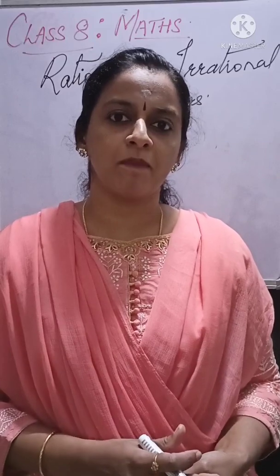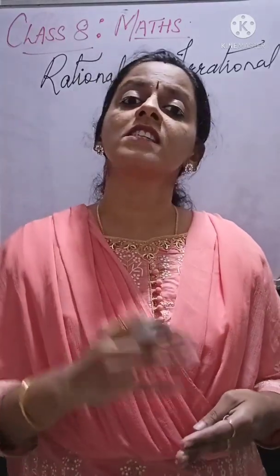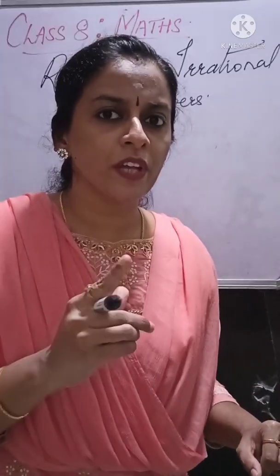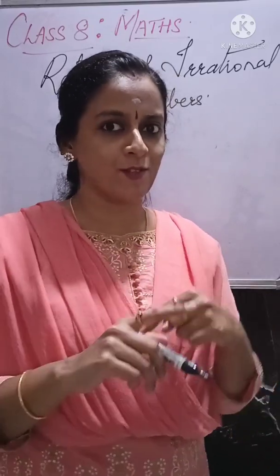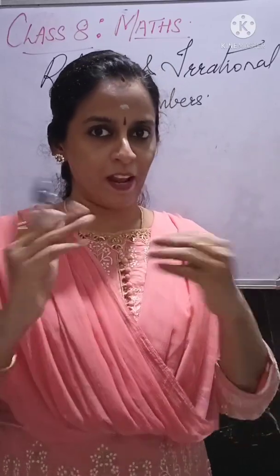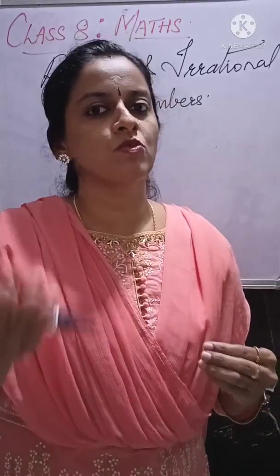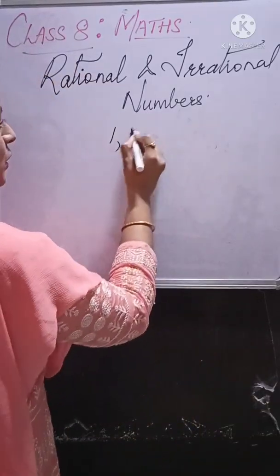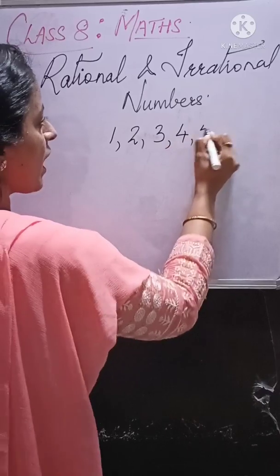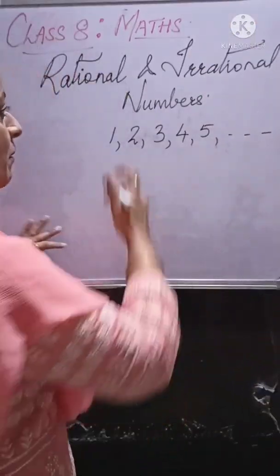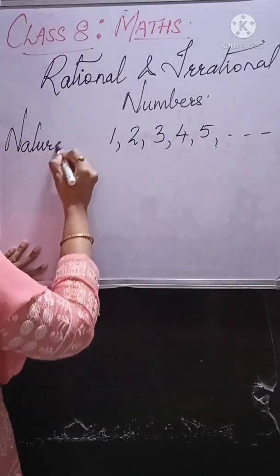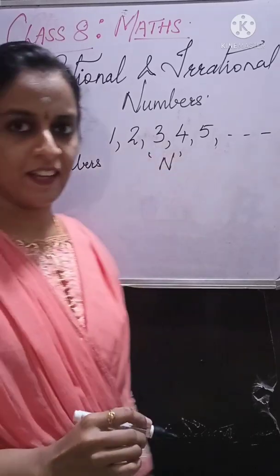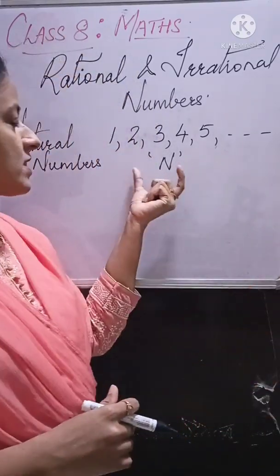Before getting into Rational and Irrational Numbers, let us quickly discuss the types of numbers which we already know. To begin with, any counting numbers — we always start counting from 1. Counting numbers start from 1, 2, 3, 4, 5 and so on. All these counting numbers are called Natural Numbers. Natural Numbers are denoted by the symbol capital N.